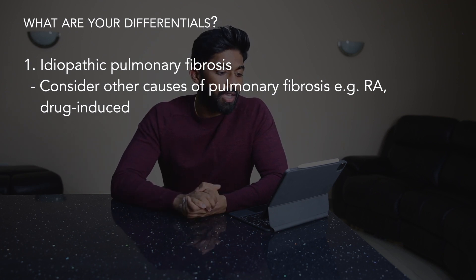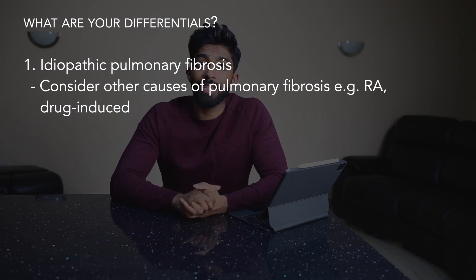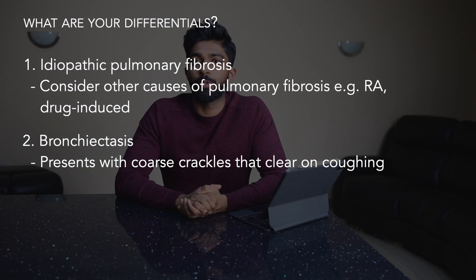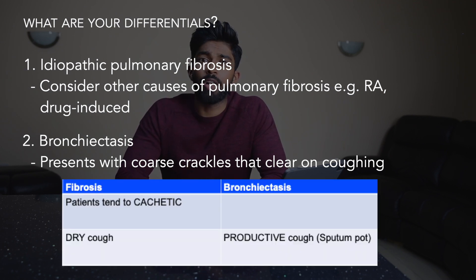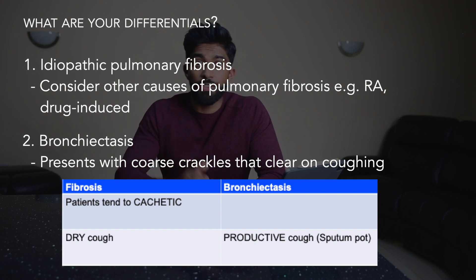For differential diagnosis, start with your most likely differential and move down the list. Here, the top differential is pulmonary fibrosis, more specifically idiopathic pulmonary fibrosis. Other possible causes include rheumatoid arthritis or drug-induced causes such as methotrexate. The next differential would be bronchiectasis, which would more likely present with coarse crackles that clear on coughing. Practically, two clues from the end of the bed: pulmonary fibrosis patients tend to be more cachectic and have a very dry cough, whereas bronchiectasis patients tend to have a wet, productive cough. I always ask the patient to take a big cough at the start of the respiratory examination.